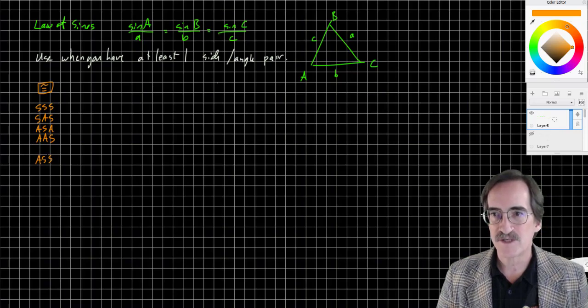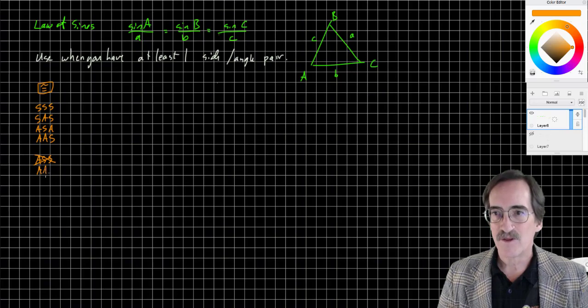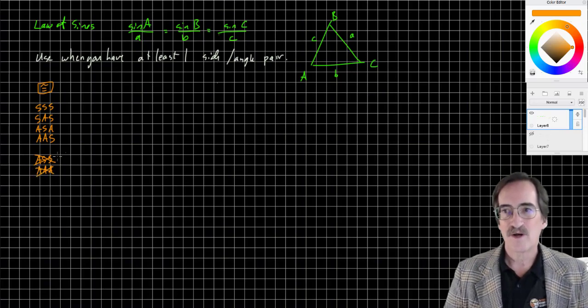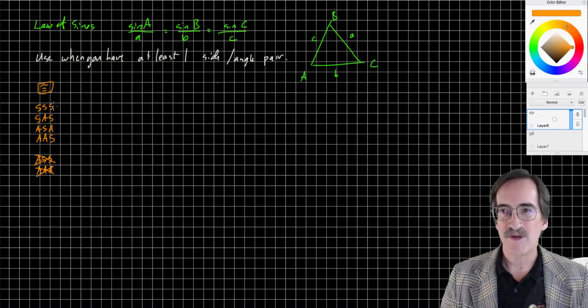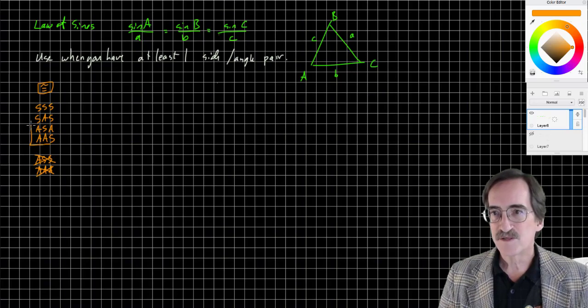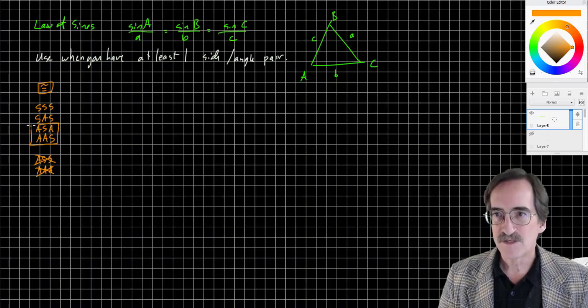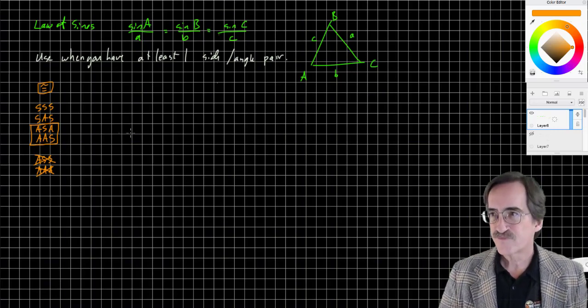Note, by the way, there is no angle side side because that spells a bad word, and there is no angle angle angle. The angle side side is a special case that deserves some attention. We may address that later on. I'm going to look at these two right here, because these two cases are the cases in which the Law of Sines can work.